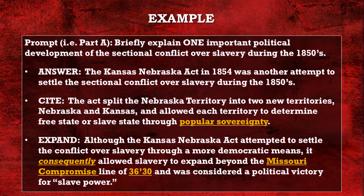Here's an example prompt — Part A: Briefly explain one important political development of the sectional conflict over slavery during the 1850s. Sentence 1 answers the question: 'The Kansas-Nebraska Act of 1854 was another attempt to settle the sectional conflict over slavery during the 1850s.' Sentence 2 cites: 'The act split the Nebraska territory into two new territories, Nebraska and Kansas, and allowed each territory to determine free state or slave state through popular sovereignty.' That piece of SFI backs up the claim in sentence one.